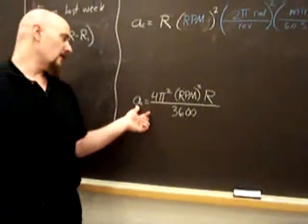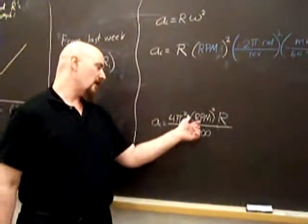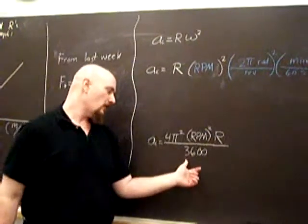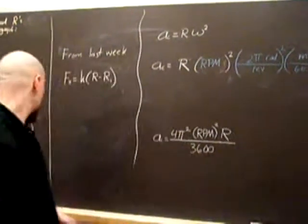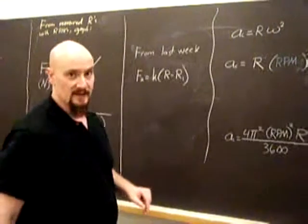The radial acceleration: 4 pi squared, RPM squared, R over 3600, to get our meters over seconds squared.